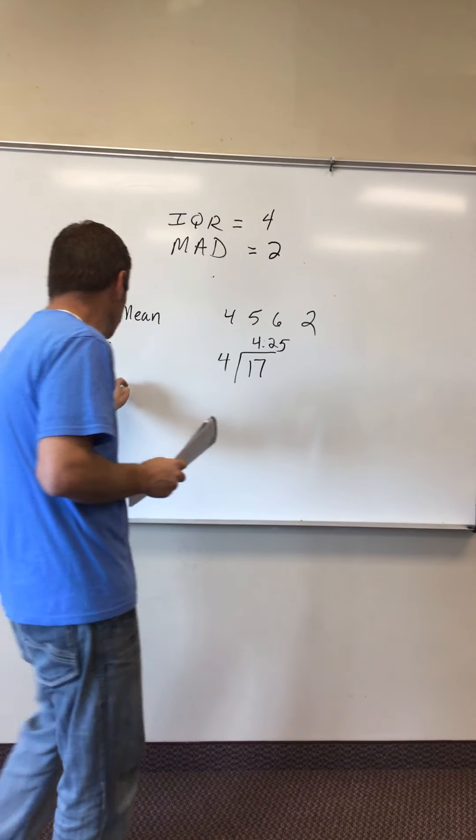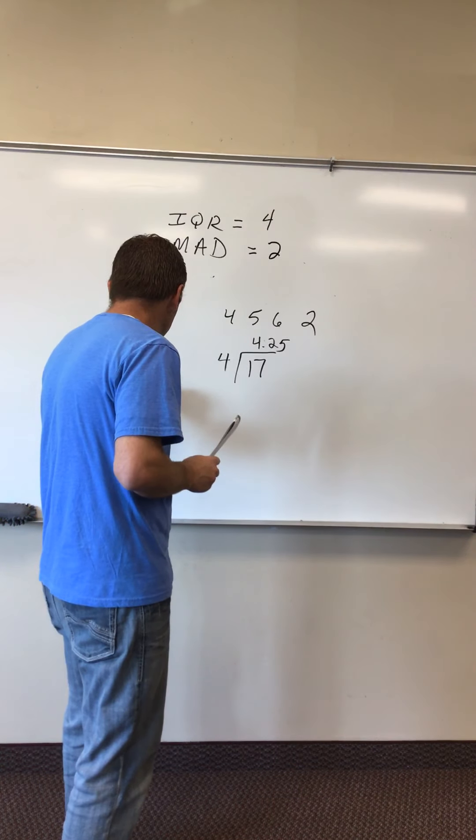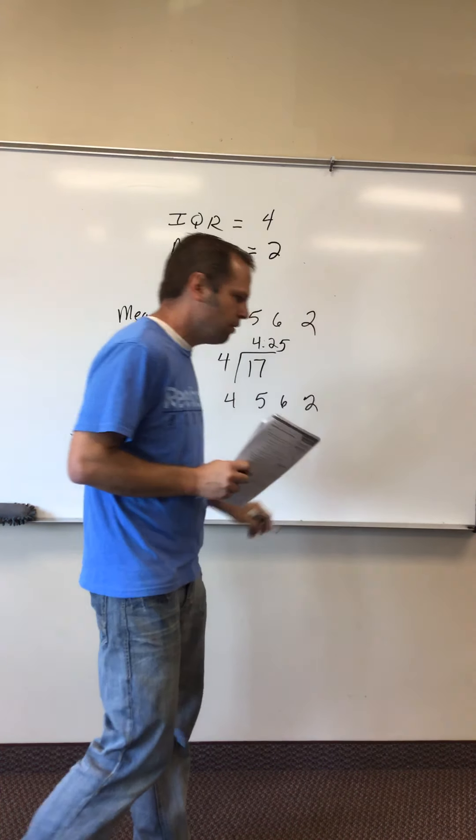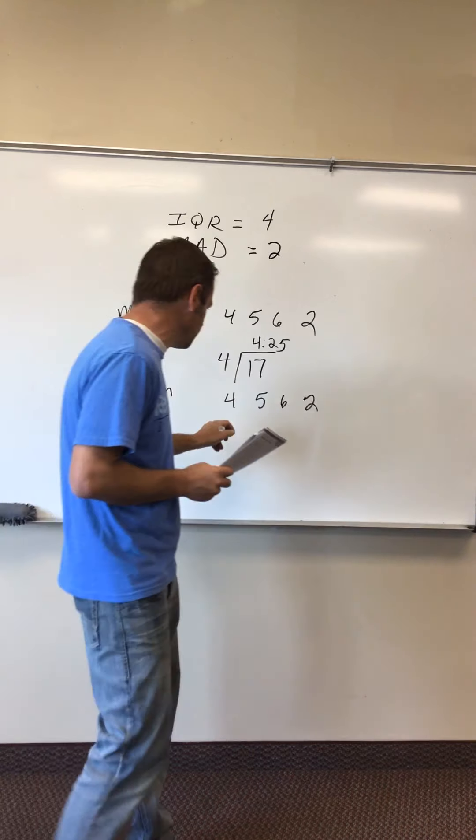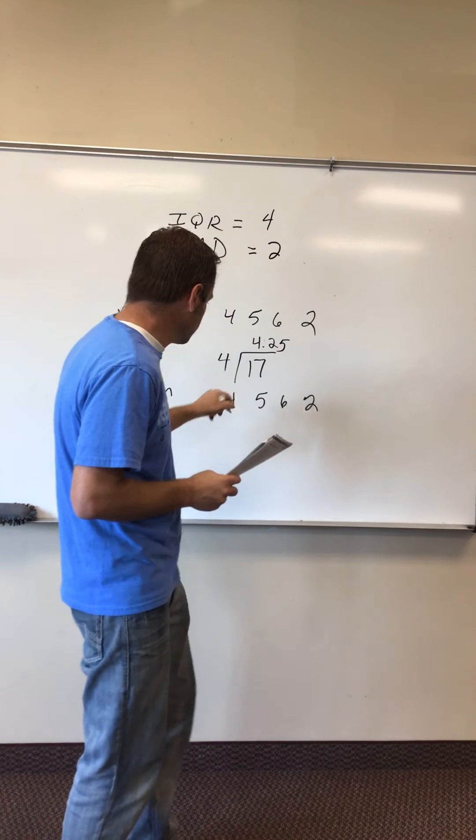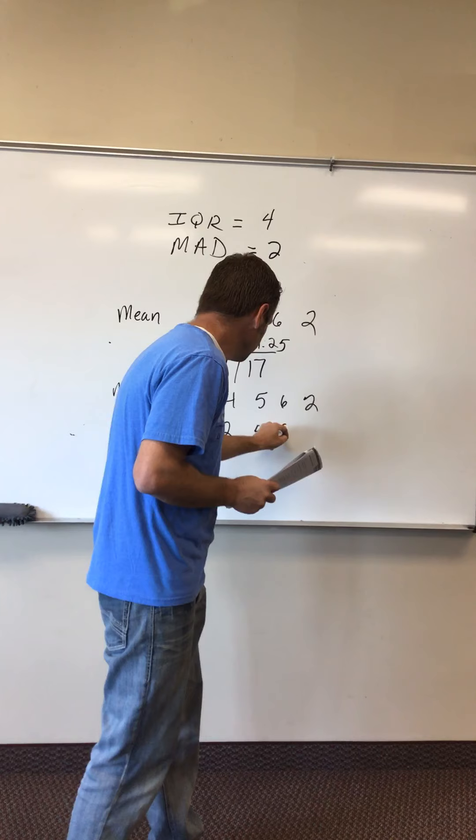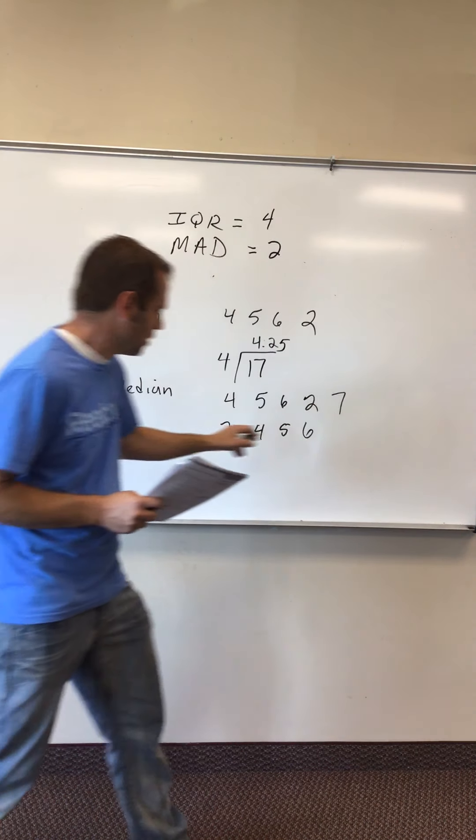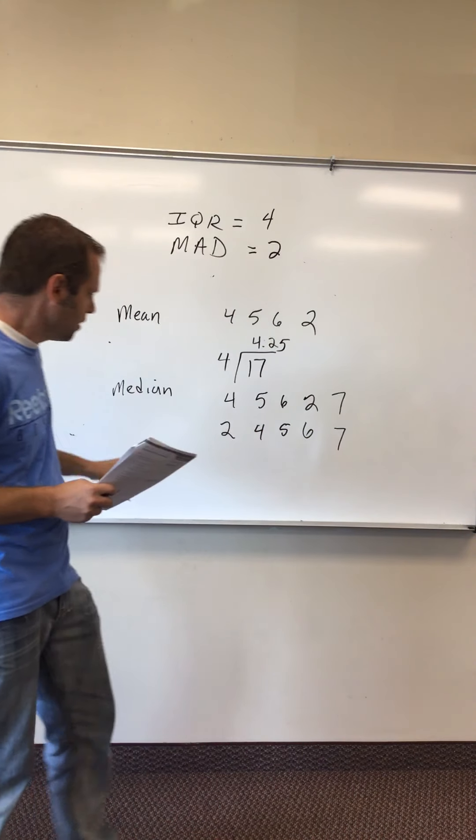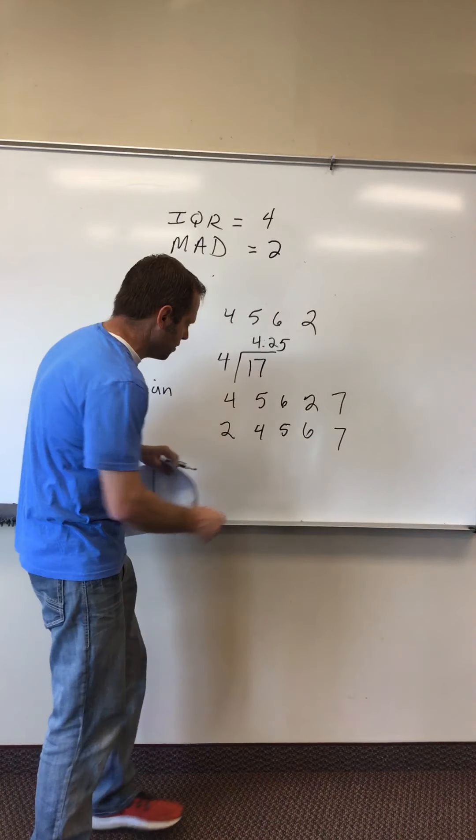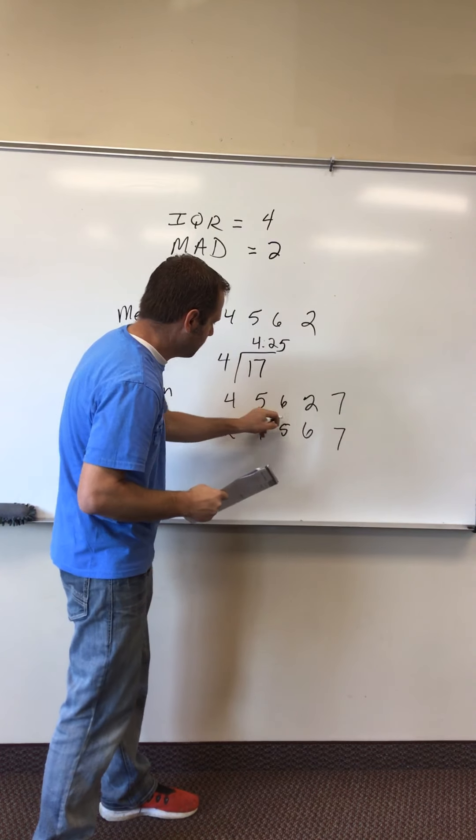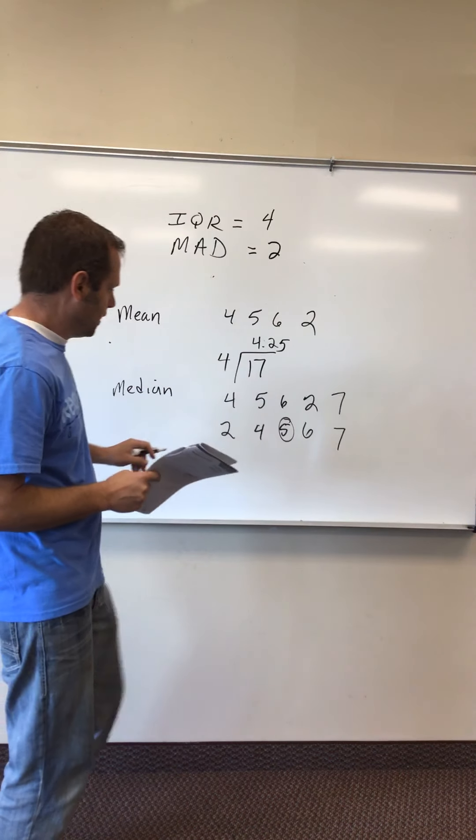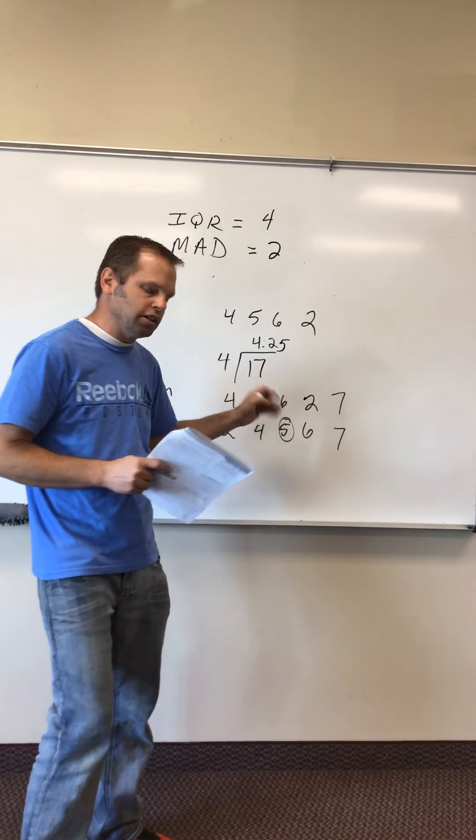Median is the middle number. So if I have 4, 5, 6, 2, first thing I do to find my median is I put them in order from smallest to biggest: 2, 4, 5, 6. Let's add one more, 7, just so we have an odd number. Then I find the number in the middle, which in this case would be 5.